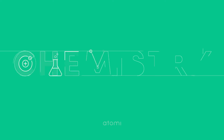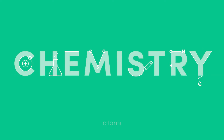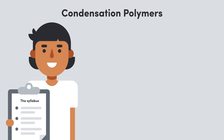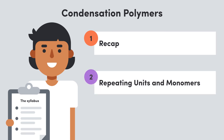Hey everyone, we're back with some more condensation polymers. In the last video, we saw how they're formed and the types of monomers that can be used to make a couple of different types of condensation polymers. In this video, we'll start with a real quick recap, then just like we did with addition polymers, we're now going to look at how we can find the repeating units to predict the monomers that a condensation polymer was derived from. Check below the video to see the syllabus dot points we're covering.